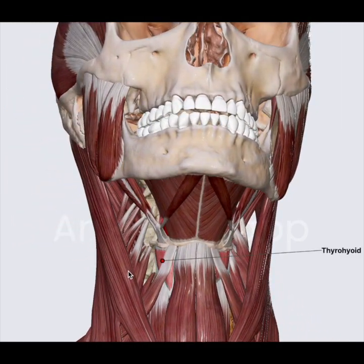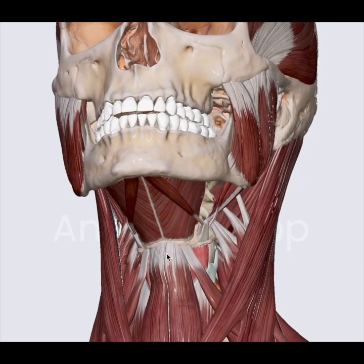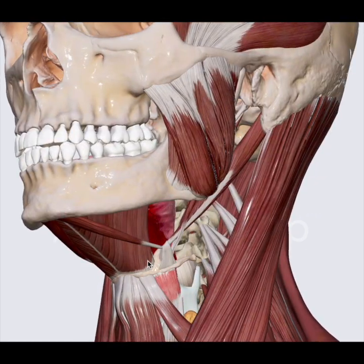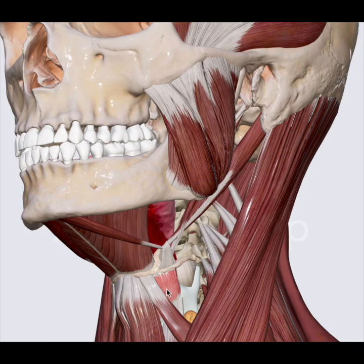Its function, in conjunction with other infrahyoid muscles, is to depress the hyoid bone. However, the thyrohyoid muscle has an additional function. When the hyoid bone is fixed and this muscle contracts, the thyroid cartilage will get pulled up. This action is important for a person who needs to sing high notes.